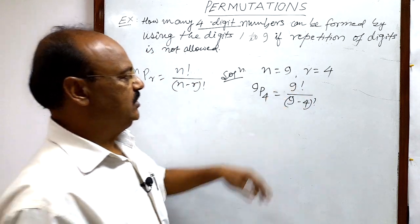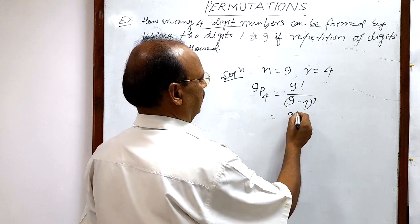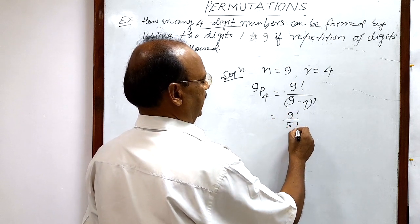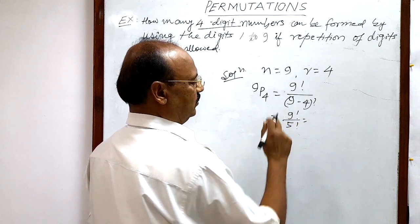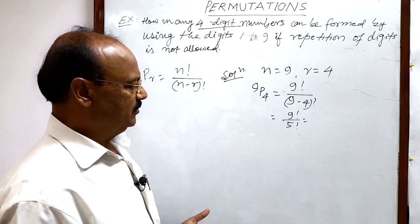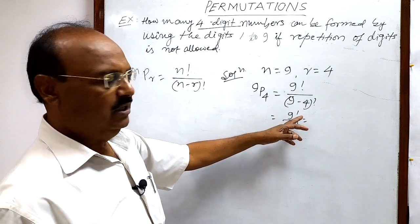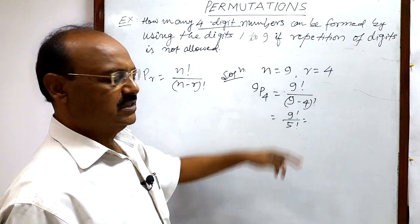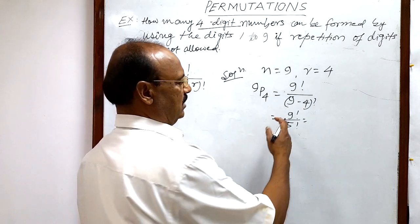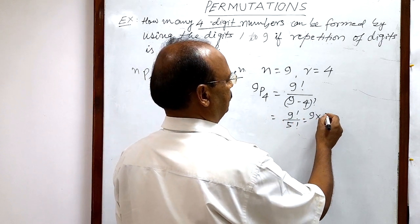Now let us calculate it. This equals 9 factorial by 5 factorial, and this 9 factorial can be expanded up to 5 factorial so that 5 factorial will be cancelled out from numerator and denominator. So this can be written as 9 into 8 into 7 into 6 into 5 factorial, and denominator is 5 factorial.